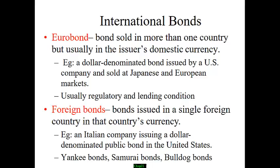Foreign bonds are typically targeted at one market and the currency raised is typically that market's currency. For example, an Italian company issuing bonds in the United States would raise them in US dollars. For foreign bonds, you've probably heard of Yankee bonds, Samurai bonds, and Bulldog bonds, corresponding to bonds raised in US dollars, Japanese yen, and British pounds.